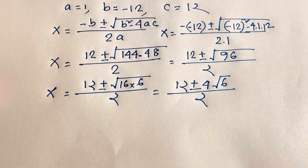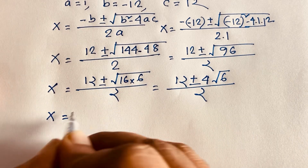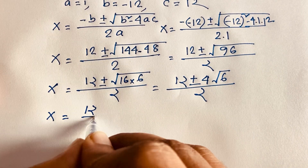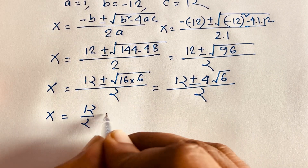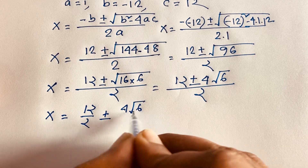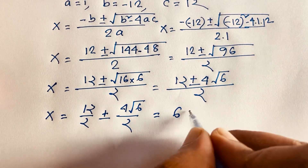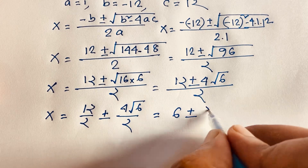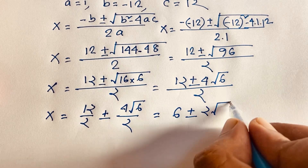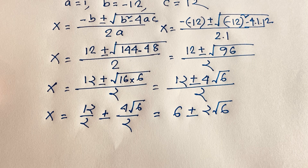Dividing both terms in the numerator by 2: 12 over 2 is 6, and 4 root 6 over 2 is 2 root 6. So x is equal to 6 plus or minus 2 square root 6.